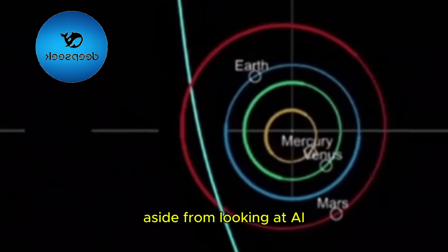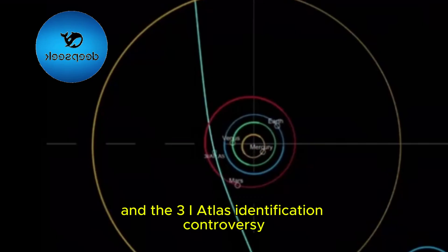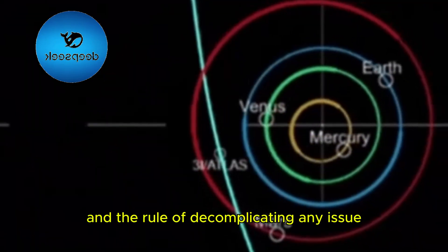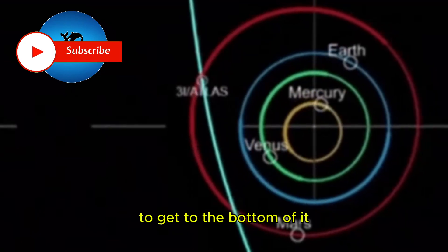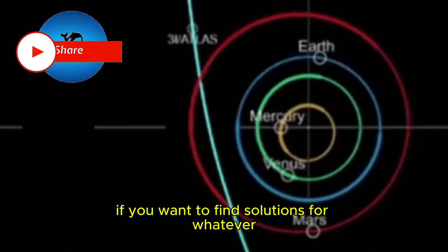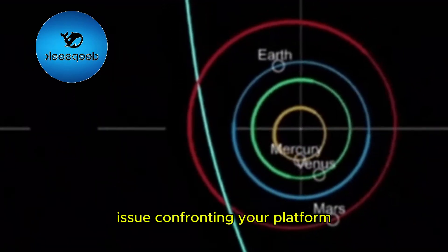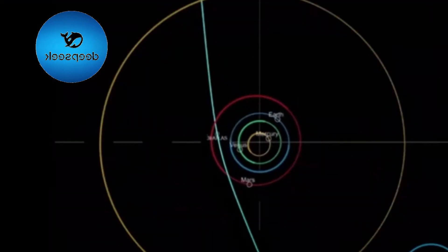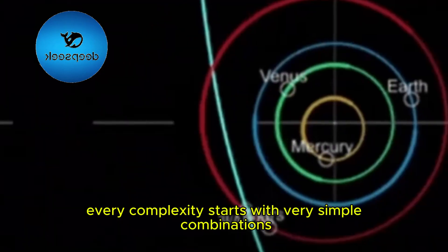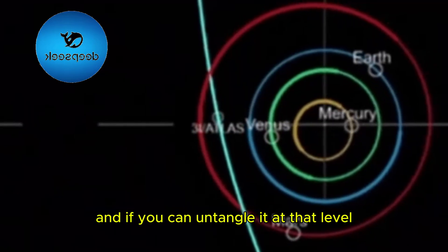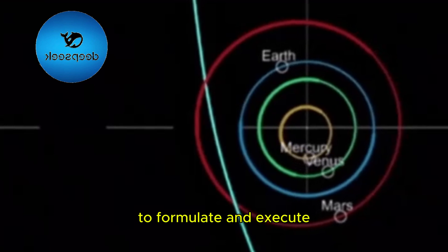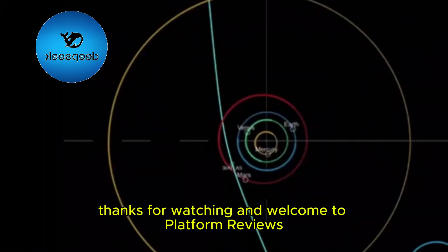Aside from looking at AI and the 3I Atlas identification controversy, this is also about platforms and the rule of decomplicating any issue to get to the bottom of it. If you want to find solutions for whatever issue confronting your platform, seek to simplify the problem to its most basic form. Every complexity starts with very simple combinations and if you can untangle it at that level, your solutions may just turn out to be very simple to formulate and execute. Thanks for watching and welcome to Platform Reviews.